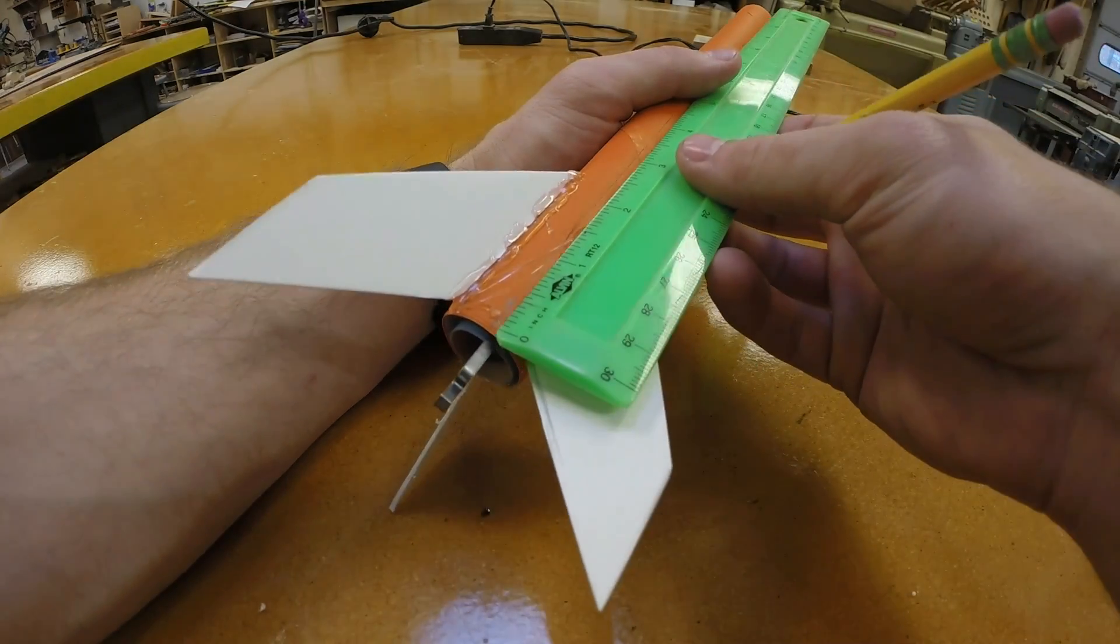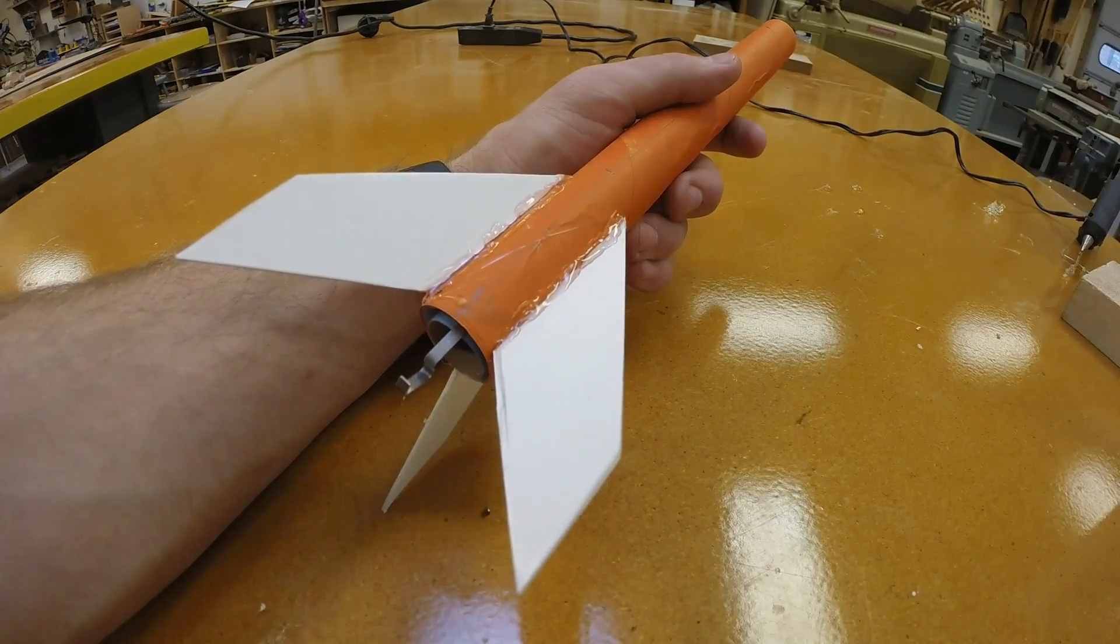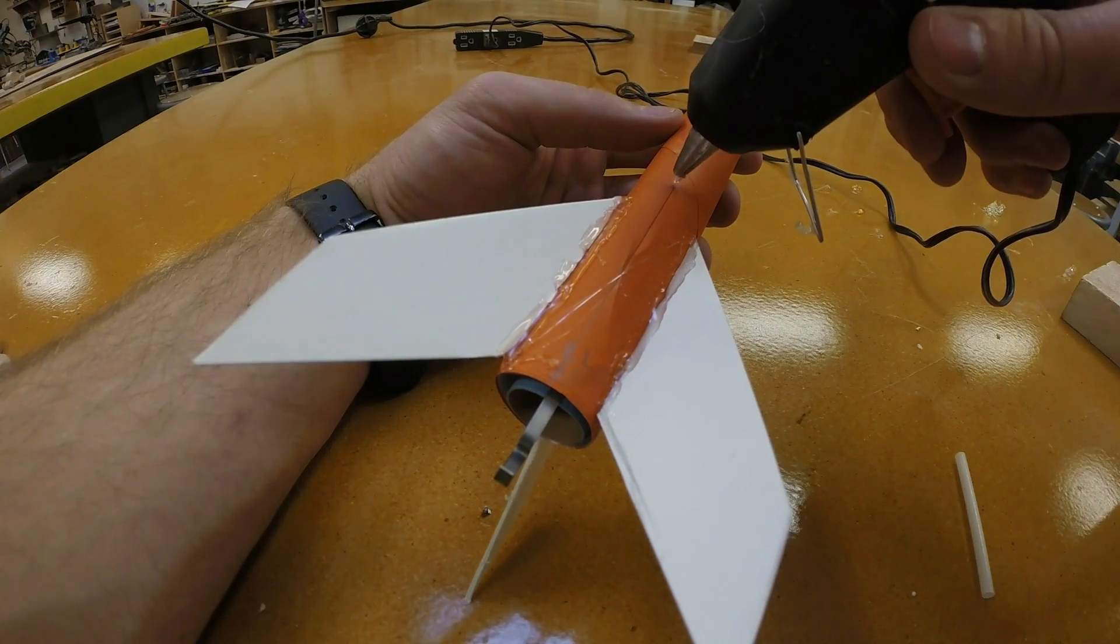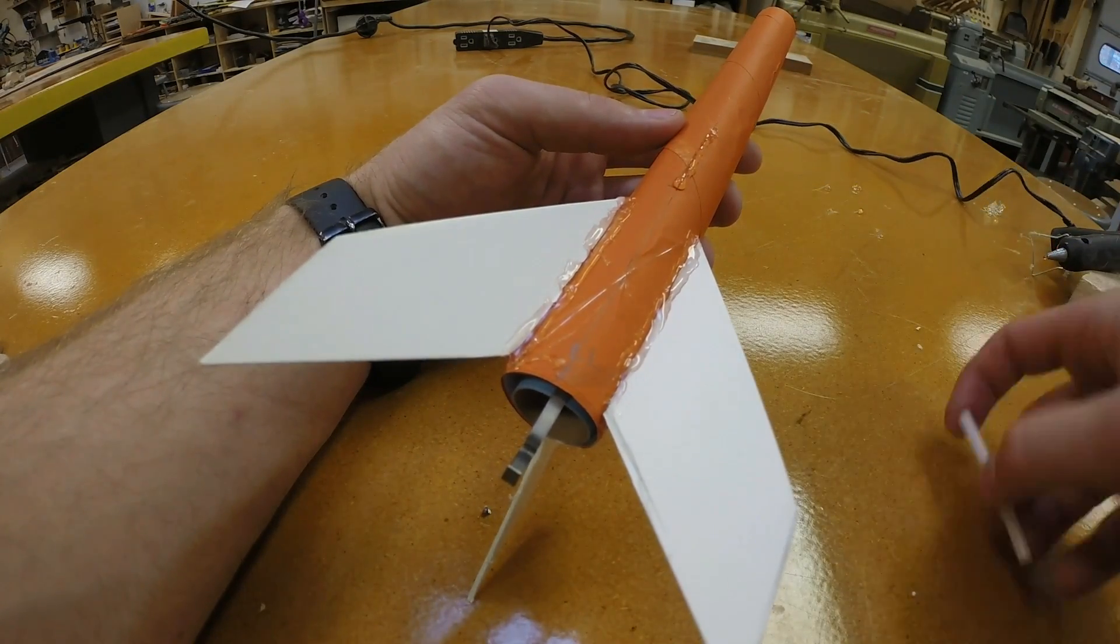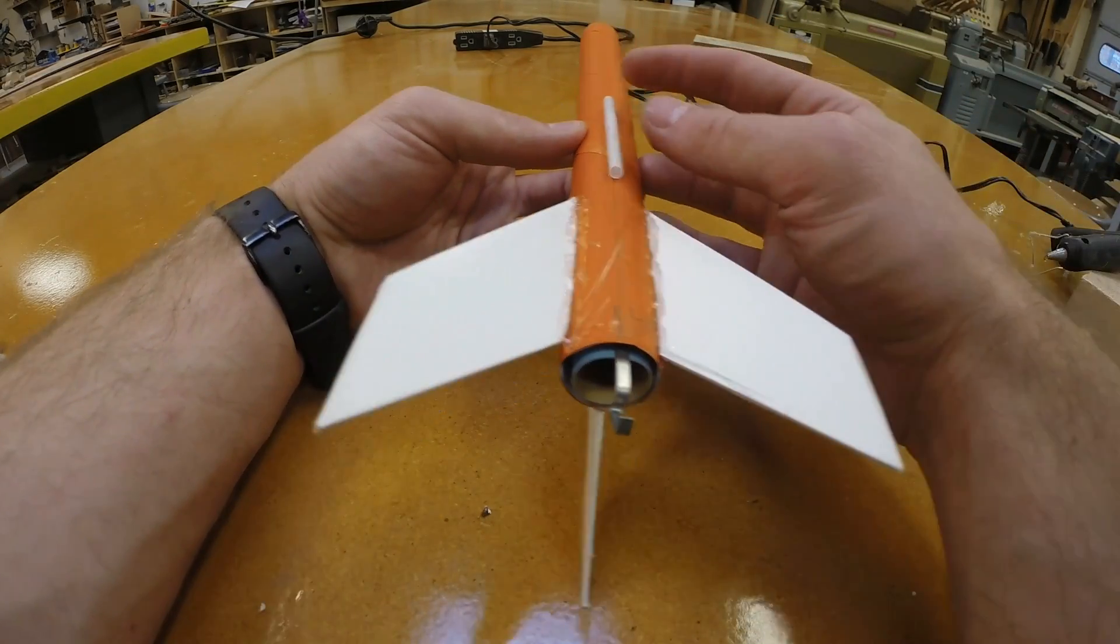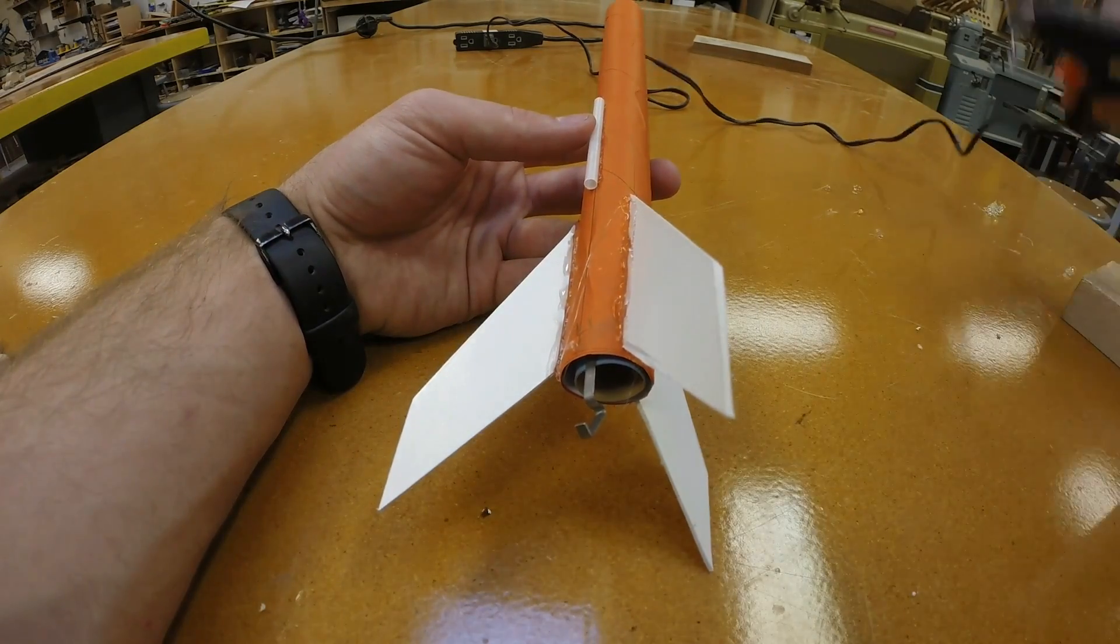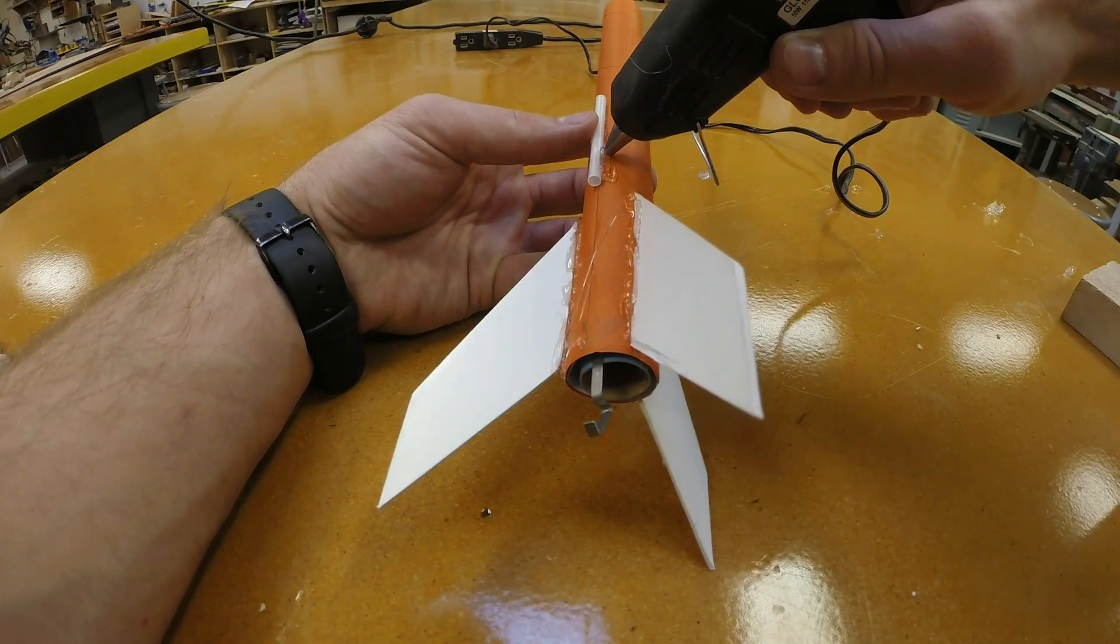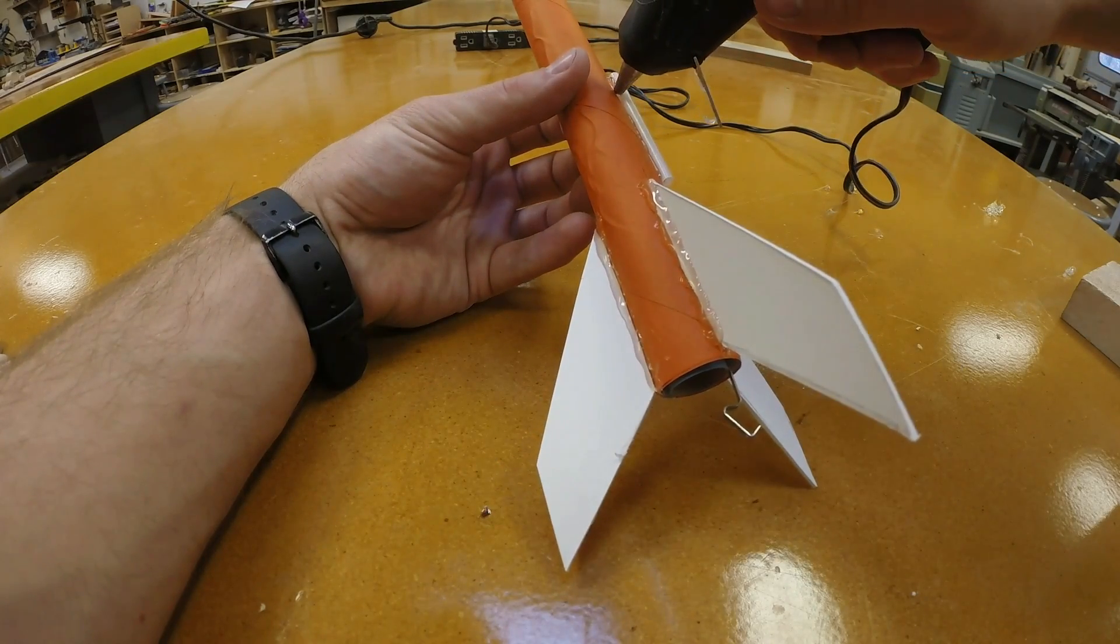Use a ruler to measure up from the end of the rocket two and three quarters of an inch and make a mark right on the line for the launch lug. From here, you can string a little bit of hot glue and then press your launch lug into the glue. It's very important that the launch lug be lined up straight with the body tube. You can add a little bit of extra hot glue on either side of the launch lug as added reinforcement.